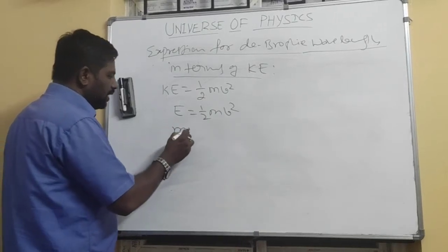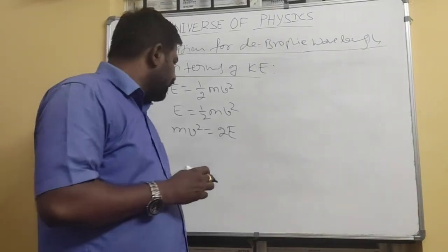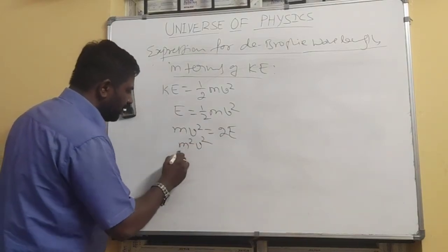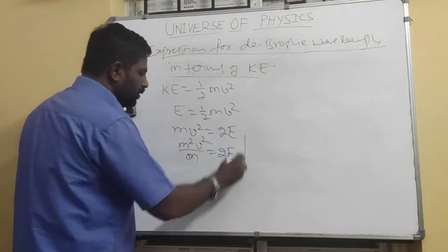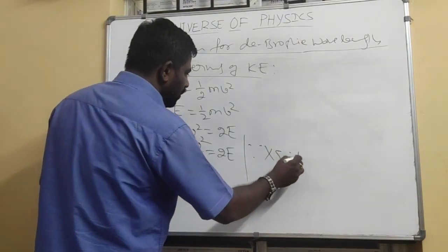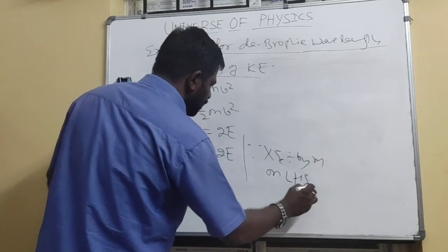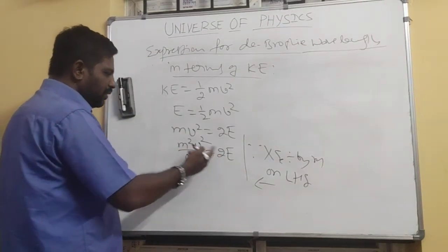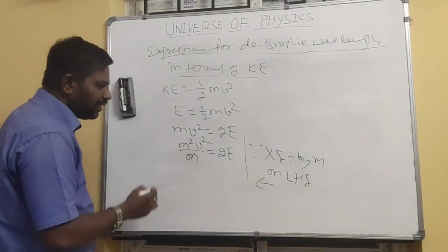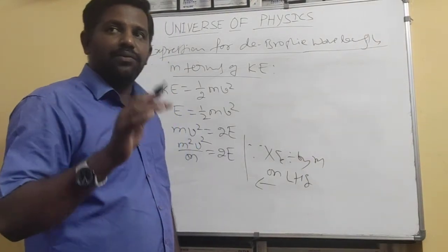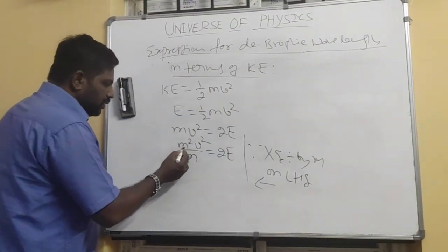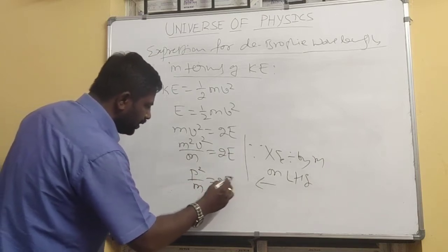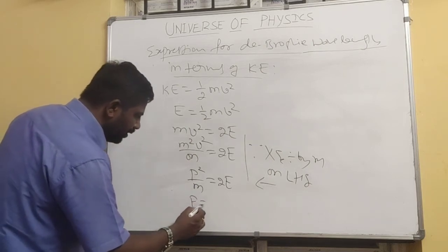We can write mv² = 2E. If we multiply and divide by m on the LHS, we get m²v²/m = 2E. Since mv is linear momentum p, this gives p²/m = 2E, or p² = 2mE, and therefore p = √(2mE).